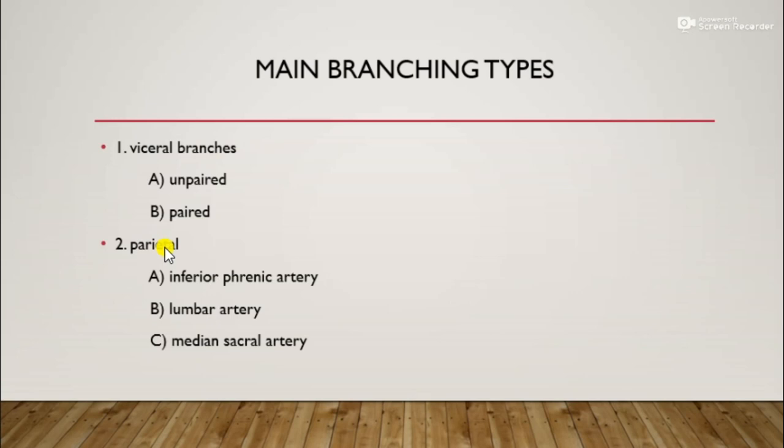The visceral branches consist of unpaired and paired arteries. The parietal branches consist of three arteries: the inferior phrenic artery (phrenic means diaphragm), the lumbar artery, and the median sacral artery.